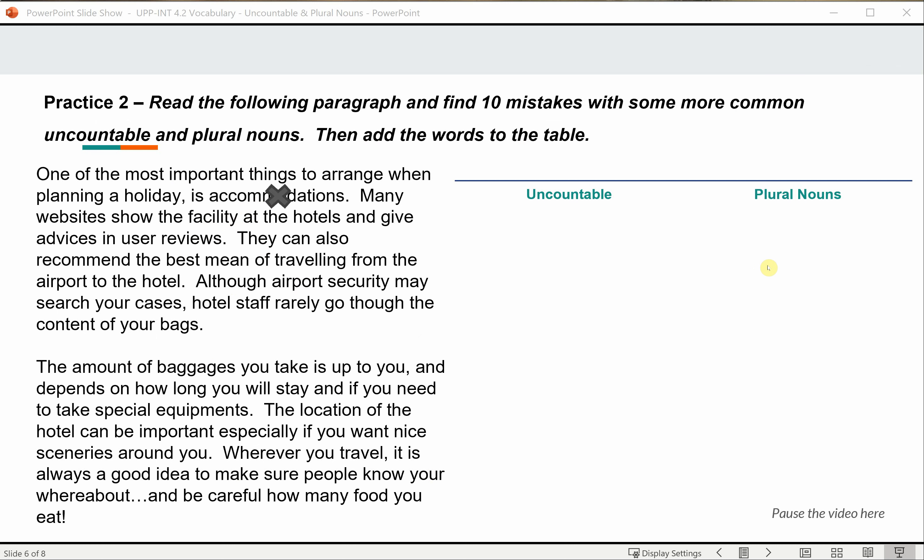So the 10 mistakes are here: accommodation, facility, advice, means, contents, baggage, equipment, scenery, whereabouts, and how much food you eat.